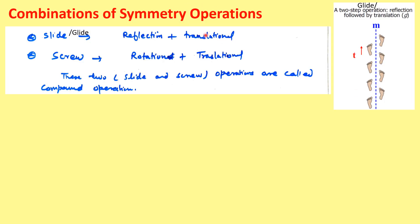There are also combinations of different symmetry operations. A glide operation combines reflection plus a translation vector — for example, a footprint reflects but also translates slightly upward. Similarly, rotation combined with translation gives screw symmetry. These glide and screw operations are called compound or combined symmetry operations.